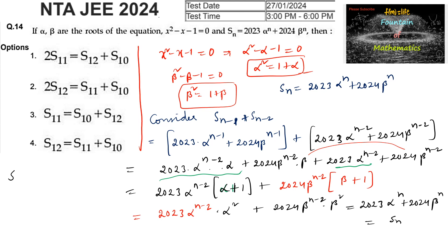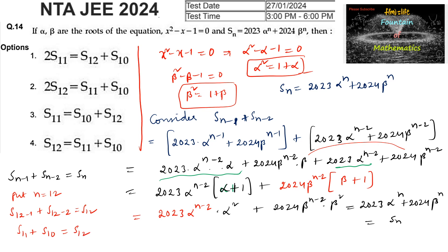Which is nothing but Sn. So finally we got it: S(n-1) plus S(n-2) equals Sn. By substituting n equals 12, we have S11 plus S10 equals S12. That is S(n-1) plus S(n-2) equals Sn, which is option D.